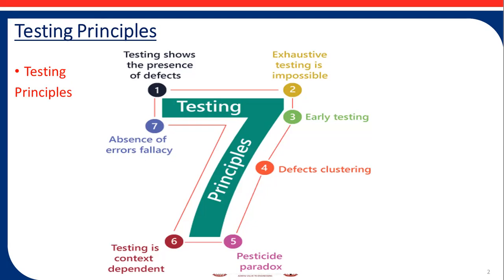The third principle is early testing. Early testing saves time and money. To find defects early, both static and dynamic test activities should be started as early as possible in the software development lifecycle (SDLC). Testing early in the software development lifecycle helps to reduce and eliminate costly changes.